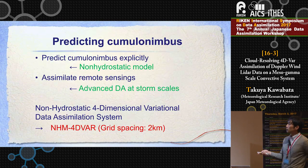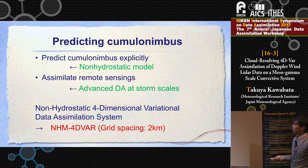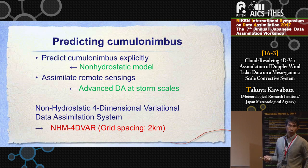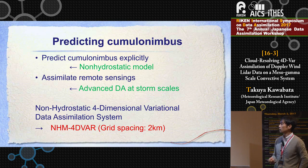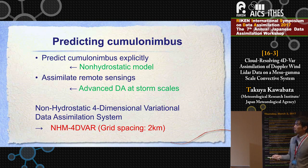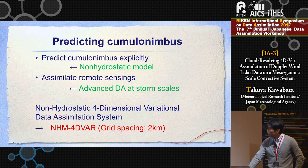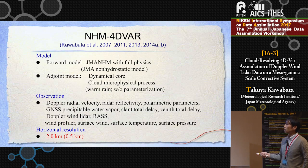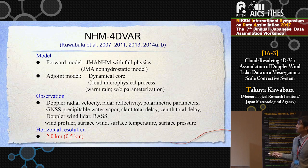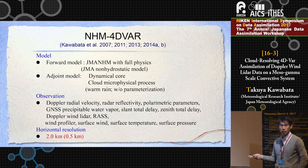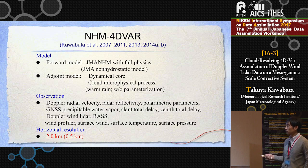For predicting cumulonimbus, we need a non-hydrostatic model to predict it explicitly, and also a connection between the model and observations — this is the advanced data assimilation system, operating at storm scales less than 2km. We have been developing the non-hydrostatic 4D-Var since 2002, called the NHM 4D-Var. This system consists of two parts: the forward model is the JMA mesoscale non-hydrostatic model with full physics including 3-ice microphysics, radiation, turbulence, and so on. Its adjoint model is limited to the dynamical core and warm-rain microphysical processes.